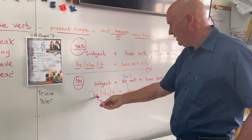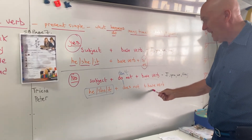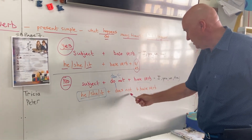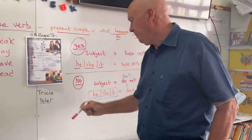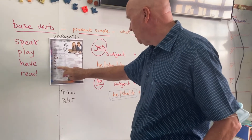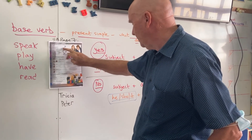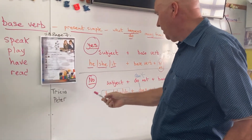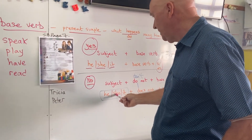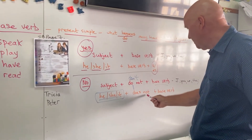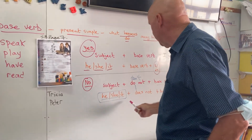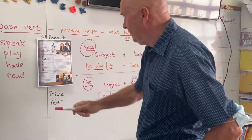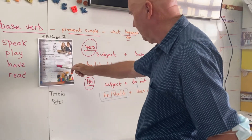Number four: Peter and a pet. The answer is no. Our subject is Peter — he — so we say 'does not' and the base verb: Peter does not have a pet. Number five: Trisha and Spanish. The answer is no — subject is Trisha, she — so: Trisha does not speak Spanish. We just use the base verb. It's the same structure as number one.